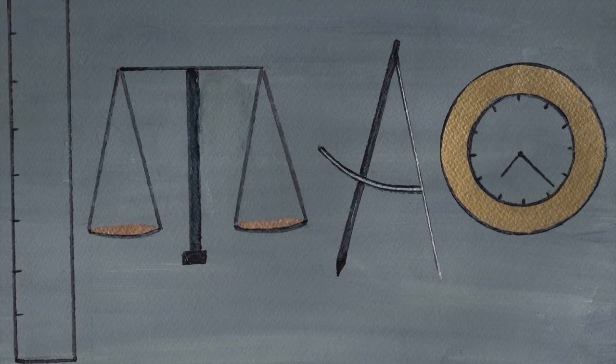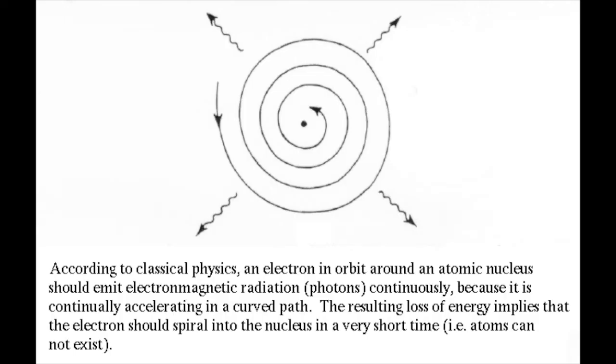Let's talk about my hero in the physics world. When the physicist Max Planck's decades-long work on atoms was ignored for Chadwick's model, he left us this riddle which is now called Planck's constant. According to classical physics, an electron in orbit around an atomic nucleus should emit electromagnetic radiation or photons continuously because it is continuously accelerating in a curved path. The resulting loss of energy implies that the electron should spiral into the nucleus in a very short time. In example, atoms cannot exist.